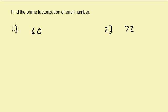Now let's look at finding the prime factorization of a number. What we want to do is write each number as a product of prime numbers. A prime number is where the only factors are the number itself and 1. Some prime numbers are 2, 3, 5, 7, 11, 13, and so on.